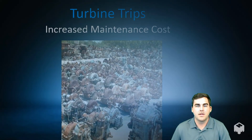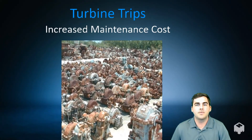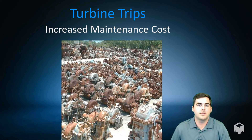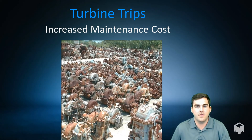Some typical problems that we see include turbine trips. Turbine trips are emergency shutdowns of turbines due to unexpected events. We're here to help you limit those events, so hopefully your site won't have a turbine graveyard that looks like this.